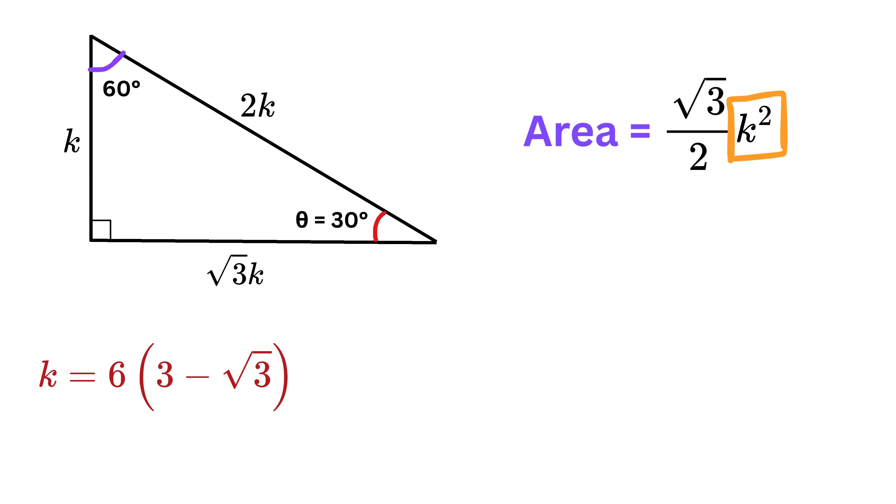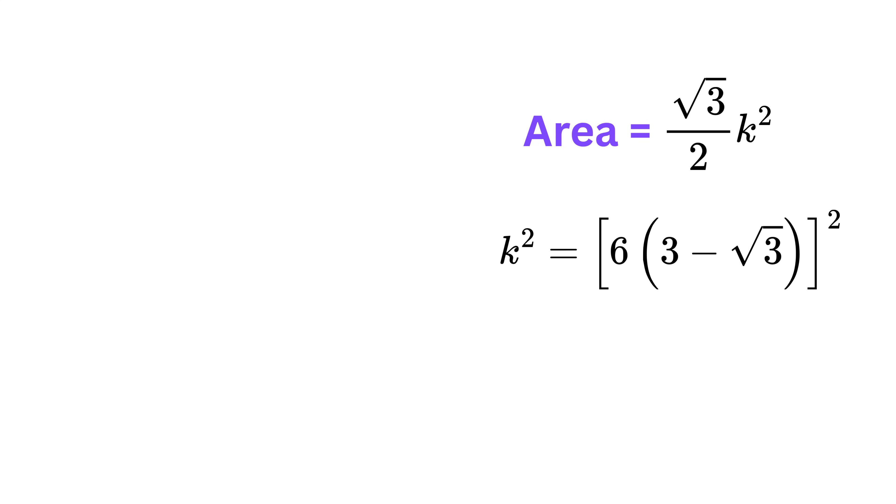Let us calculate the value of k squared. We can split it and write k squared as 6 squared times 3 minus root 3 whole squared, or 36 times this. To solve this, we will have to use the formula a minus b whole square equals a square minus 2ab plus b square.